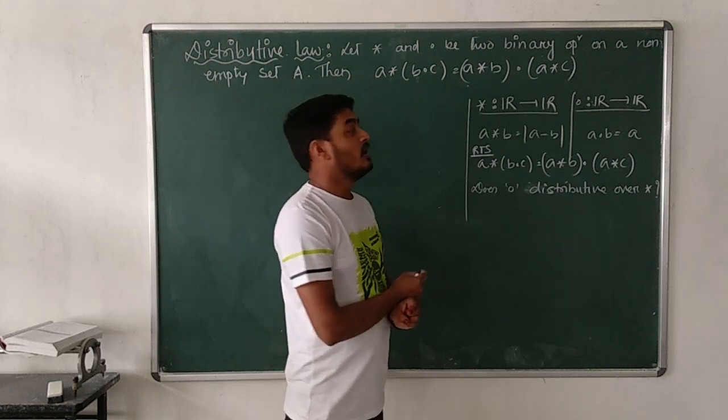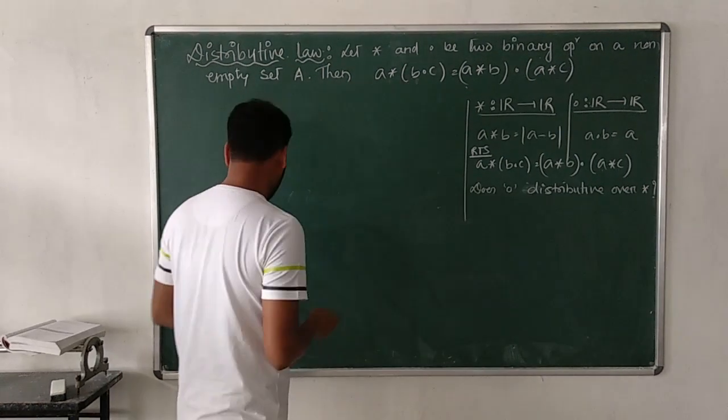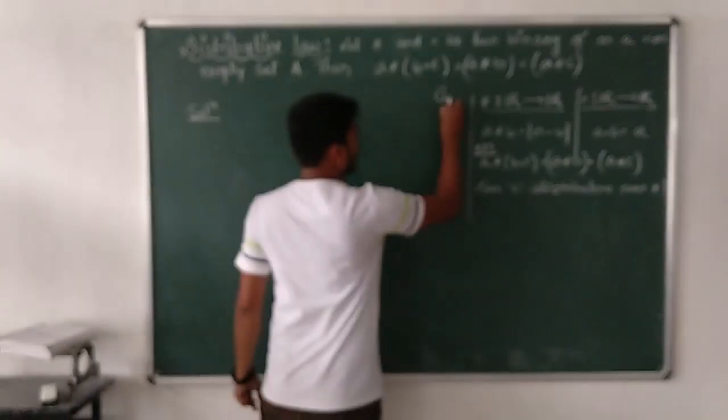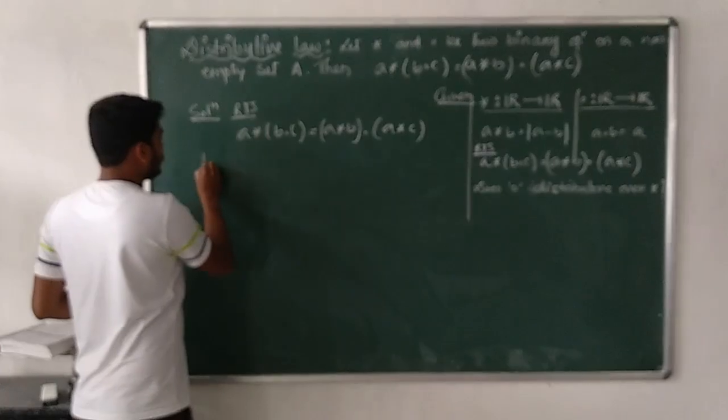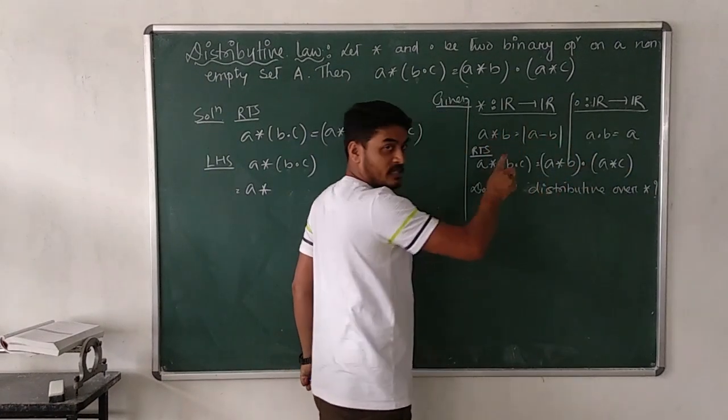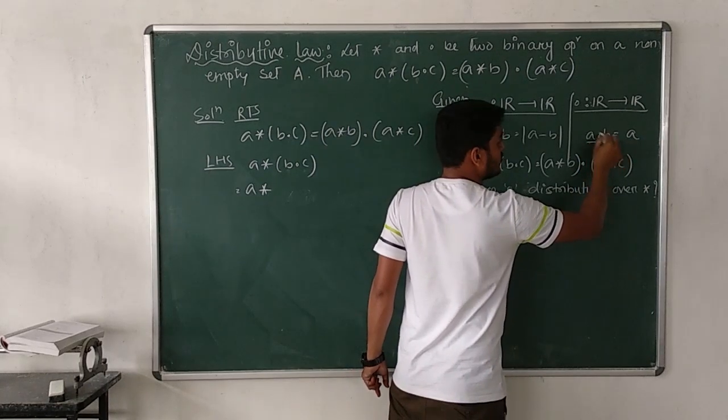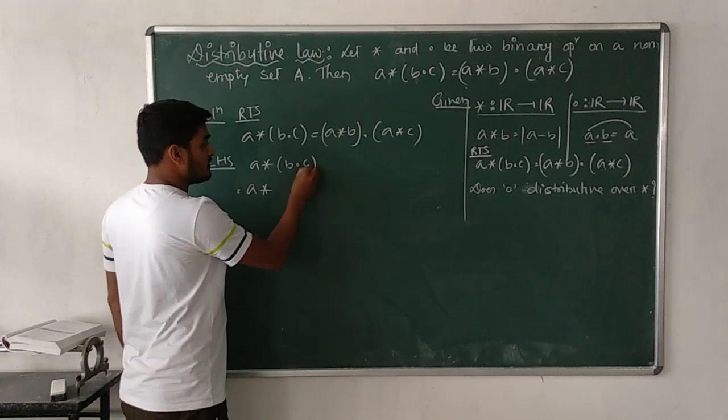Solution. First, we are required to show that a ★ (b • c) = (a ★ b) • (a ★ c). Consider the left-hand side: a ★ (b • c). According to BODMAS, simplify inside the bracket first. Since a • b = a (the first term), b • c = b. So the expression becomes a ★ b.